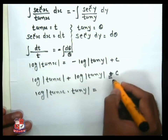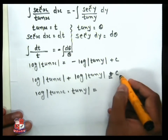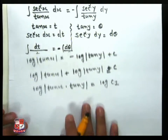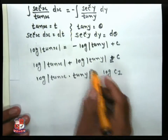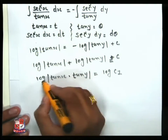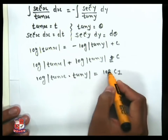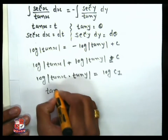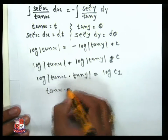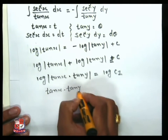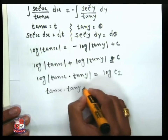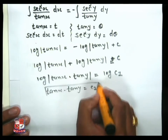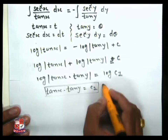We assume c = log(c₁). Applying this, the logs on both sides cancel out, and our final answer is tan(x) · tan(y) = c₁. This is our final answer for question 5a.